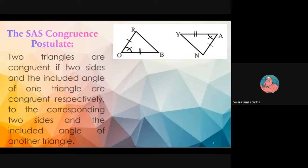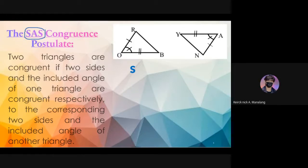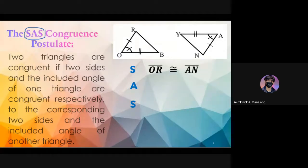We have triangle ROB and triangle NYA. Let us identify the corresponding congruent parts based on the markings. Since it is SAS, we look for side first. Manalang answers: side RO is congruent to side NA. Then the included angle — Walog answers: angle O is congruent to angle A.